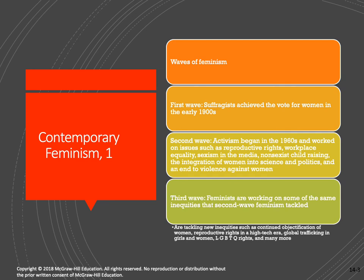The third wave of feminism really started in the 90s, looking at many of the same inequities the second wave began addressing, but with a more contemporary view. That continues to this day with the Me Too movement and many other initiatives feminists have brought forth — the continued objectification of women, the continued struggle for the right to abortion, human trafficking of women and girls, LGBTQ rights, and other contemporary issues the women's movement is fighting for.